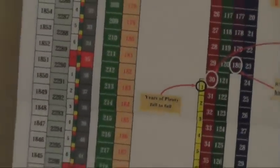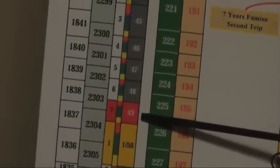And then this shaded gray column here is the seven years of famine with the seventh year colored red. And we pop over here, you see that this is the seventh year in the sabbatical period.